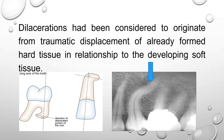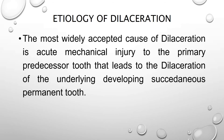Dilaceration has been considered to originate from traumatic displacement of already formed hard tissue in relationship to the developing soft tissue. Dilaceration is always detected along the long axis of the tooth in relation to the apex of the tooth.